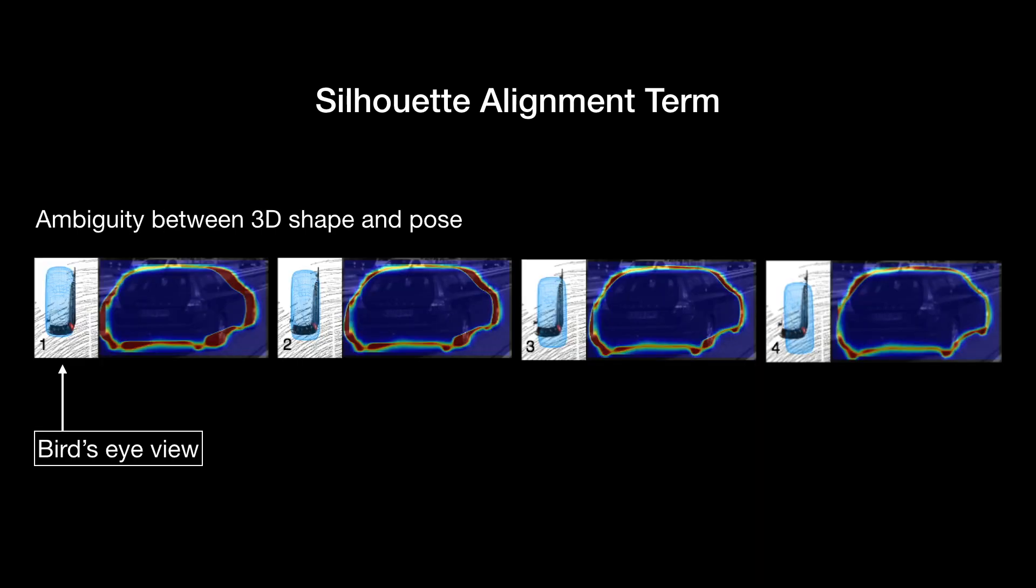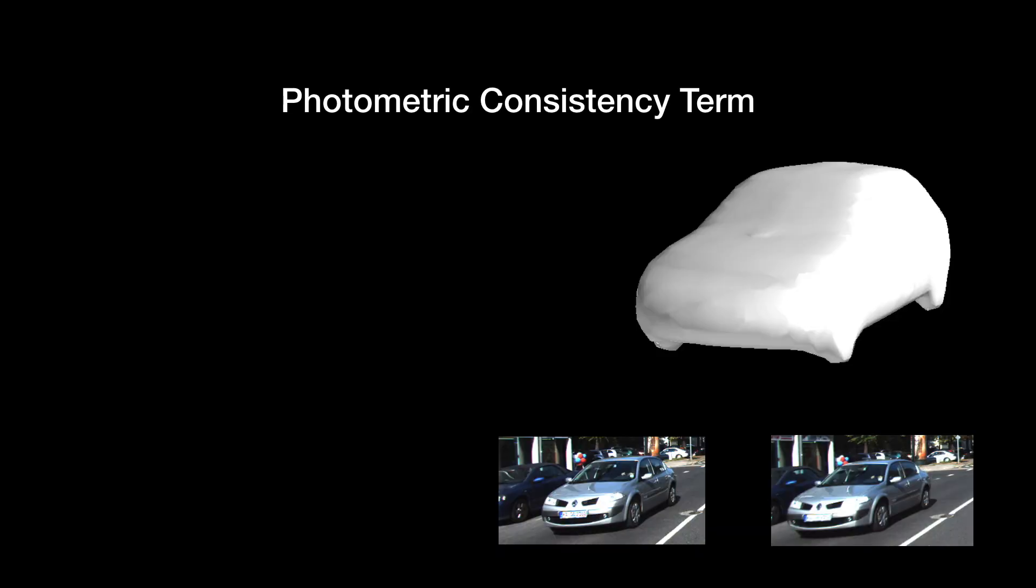Due to the ambiguity between 3D shape and pose to the 2D projection, optimizing the silhouette alignment term alone may converge to undesired local minima. In this example, in a few iterations, while the shape projection is more aligned with object segmentation, the 3D model is pulled away from its correct location. To resolve this issue, we add the photometric consistency term.